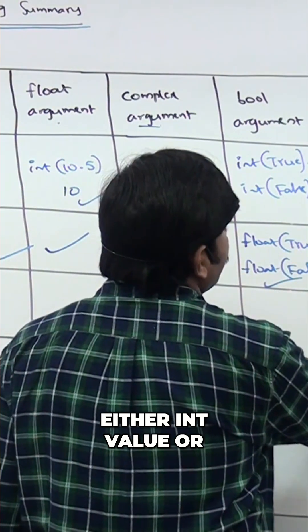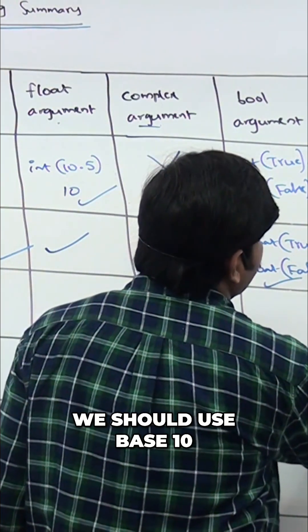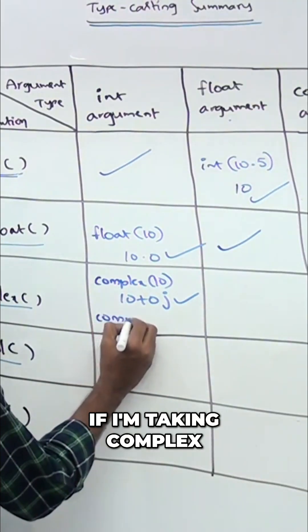...contain either an int value or float value, and we should use base 10. If I'm taking complex(10, 20), then 10 will become the real number and 20 will become the imaginary number.